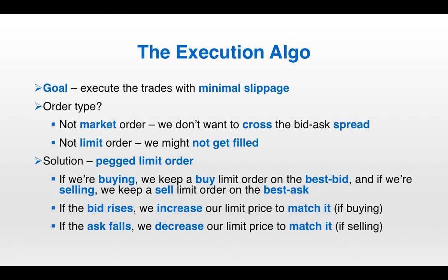Provided there are no issues, the trades are sent to the execution function where the goal is to execute trades with minimal slippage. We don't want to use pure market orders because we'd cross the bid-ask spread and have more slippage than necessary. We also don't want pure limit orders because we might not get filled if the price moves away. The solution is a pegged limit order — if we're buying, we keep a buy limit order on the best bid; if we're selling, we keep a sell limit order on the best ask. If the bid rises while buying, we increase our limit price to match it; if the ask falls while selling, we decrease our limit price to match.